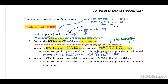Ensure that you tick off the amounts that you have used. When the cash from investing activities is completed, move on to your financing activities — the same principle applies. If your cash flow statement does not balance, this is not a train smash. Leave it and move on. Please do not waste your time trying to get it to balance. If you're running out of time in an exam, leave it and please move on.